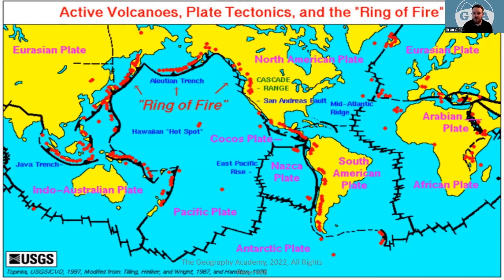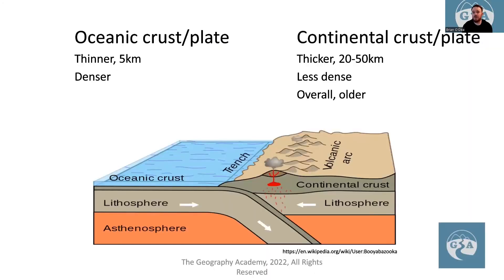The red dots on the map show active volcanoes, demonstrating that many volcanoes correlate with tectonic plate boundaries. There are two types of crust: oceanic and continental. Oceanic crust is thinner, but denser. Continental crust is thicker, but less dense overall.